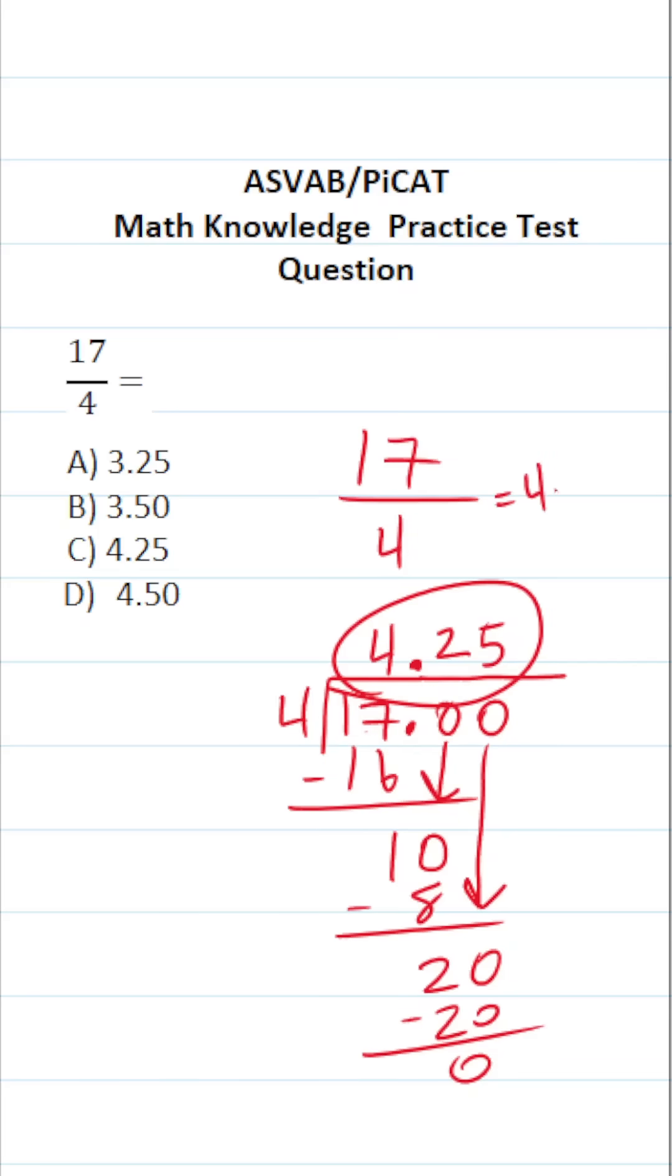17 divided by 4 is the same thing as 4.25. So the answer to this one is clearly C.